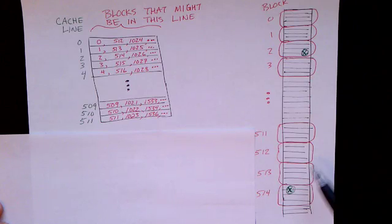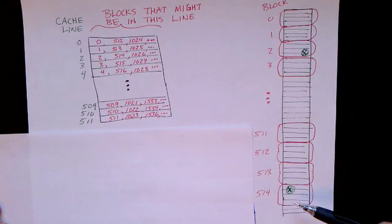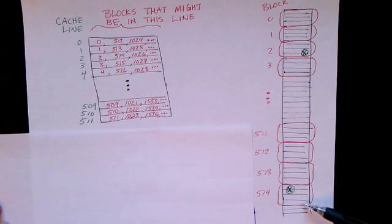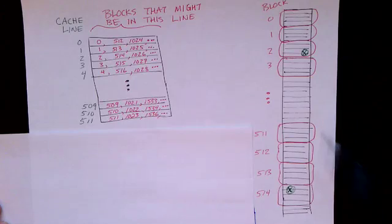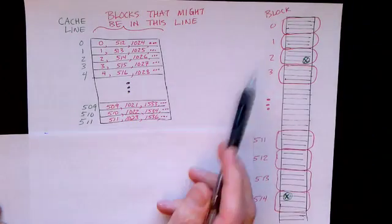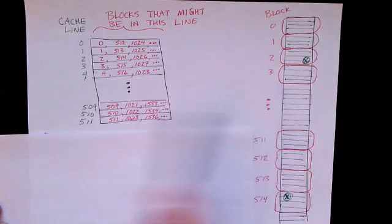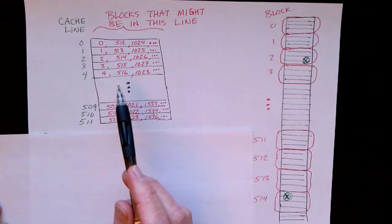And memory, all 2 gigabytes of it, I'm sorry, all 4 gigabytes, it's a 32-bit address, so we have 4 gigabytes of memory. All 4 gigabytes of memory is divided into blocks. If a block is in cache, then, this is a direct map cache. So, that block can only be stored in one particular line.